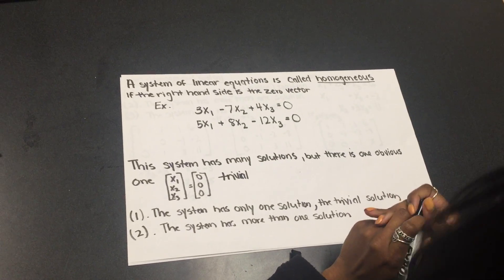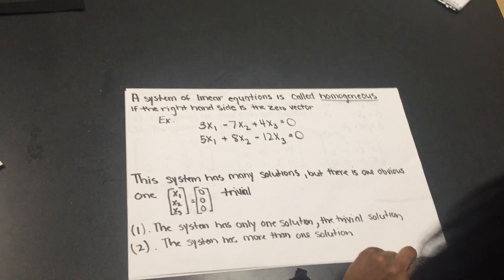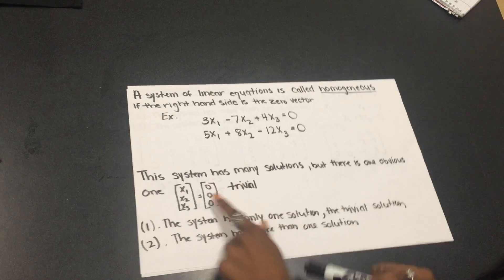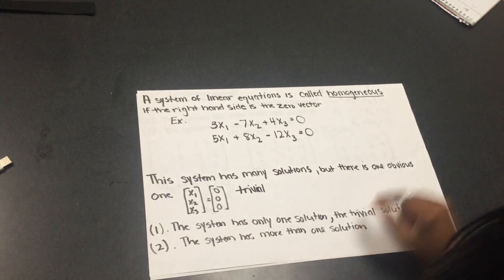So, the rules for a homogeneous system is the system has only one solution, the trivial solution, or the system has more than one solution.